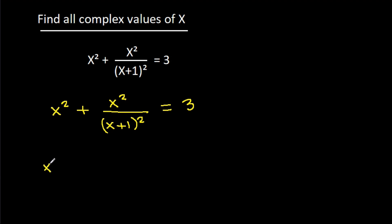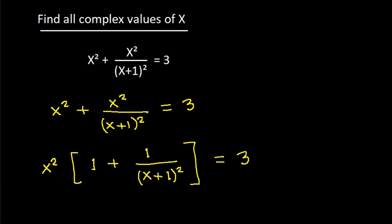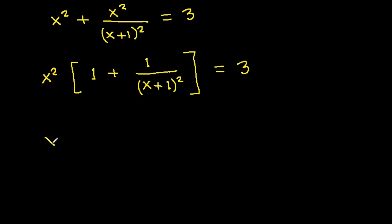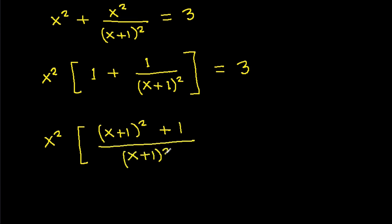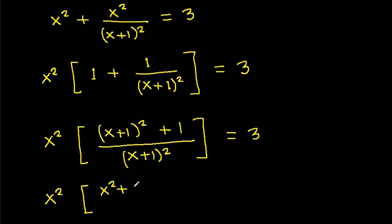We can take x² common, so it becomes x² times (1 + 1/(x+1)²) = 3. This gives x² times ((x+1)² + 1) / (x+1)² = 3, where (x+1)² expands to x² + 2x + 1.